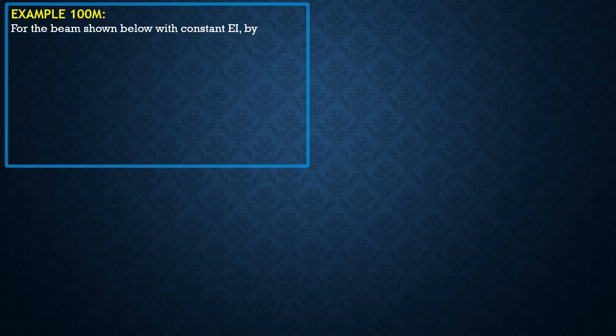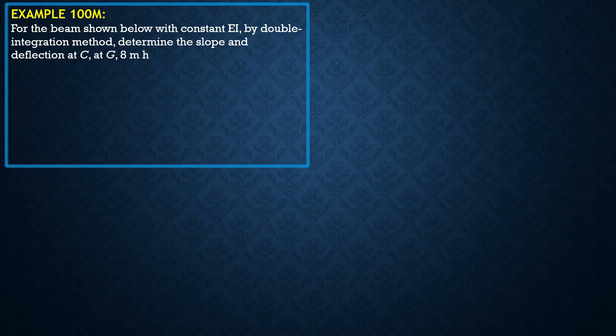For the beam shown below, we use constant EI by the double integration method. Determine the slope and deflection at C, at G which is 8 meters horizontally from A, and at E.